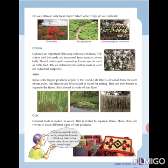Next is jute. India is the largest producer of jute in the world. Jute fiber is obtained from the stem of the jute plant. Jute sheaves are first soaked in water for retting, then beaten to separate the fibers. Sack thread is made of jute fiber — the rice bags or sacks in which rice is stored are made of jute.